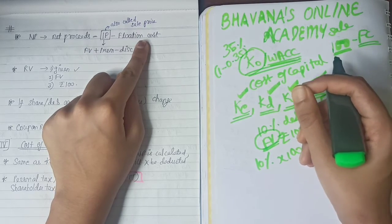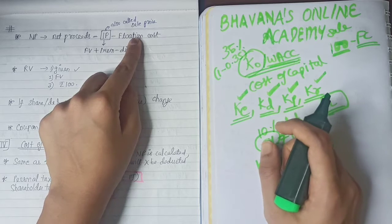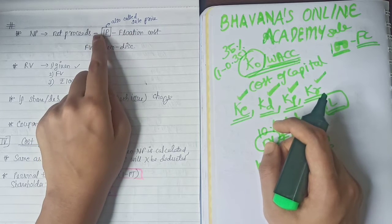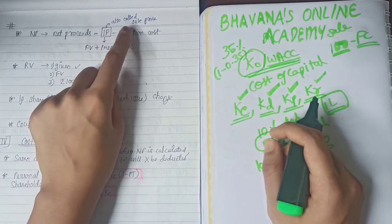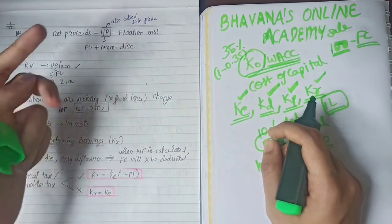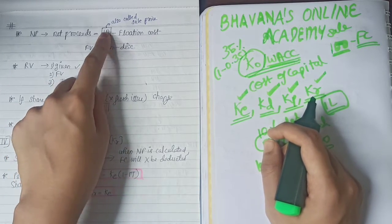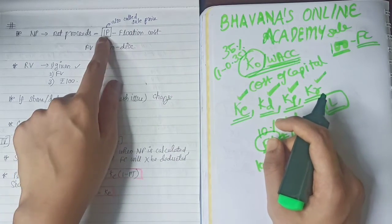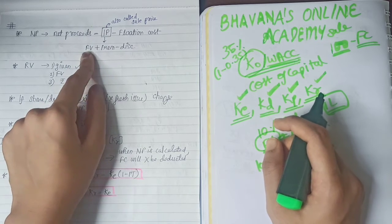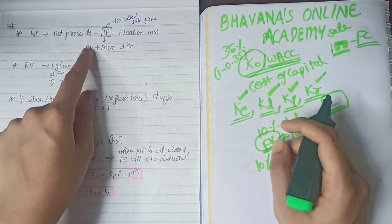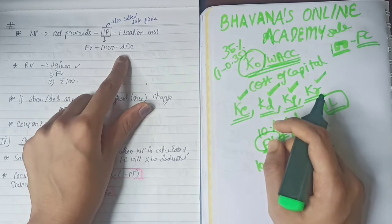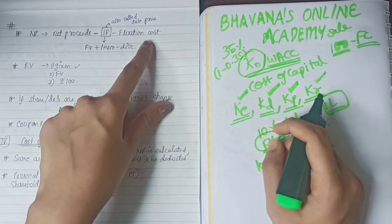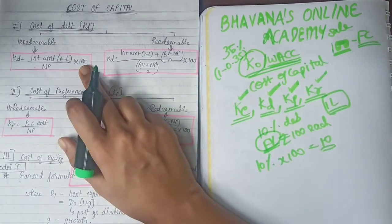In the question, they will give the flotation cost as a percentage — say 4% or 5%. You calculate that percentage on the issue price. For example, if issue price is ₹100 and flotation cost is 4%, then flotation cost = ₹4, and net proceeds = ₹100 − ₹4 = ₹96. Issue price is also known as sale price, and it equals face value plus premium or minus discount.